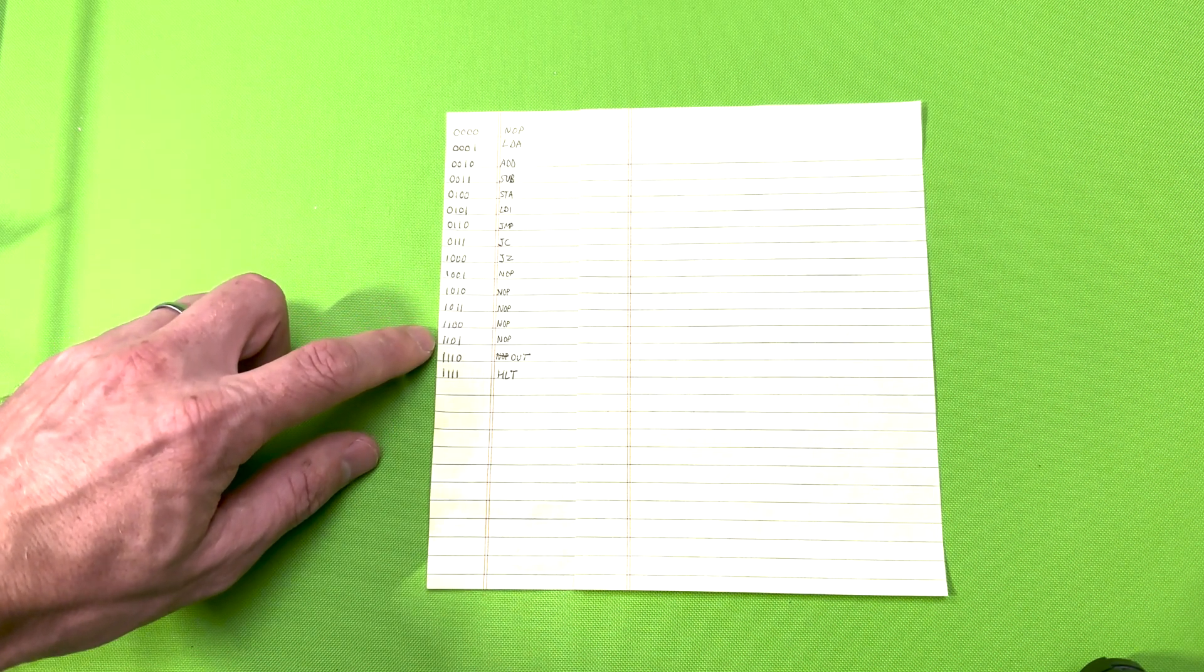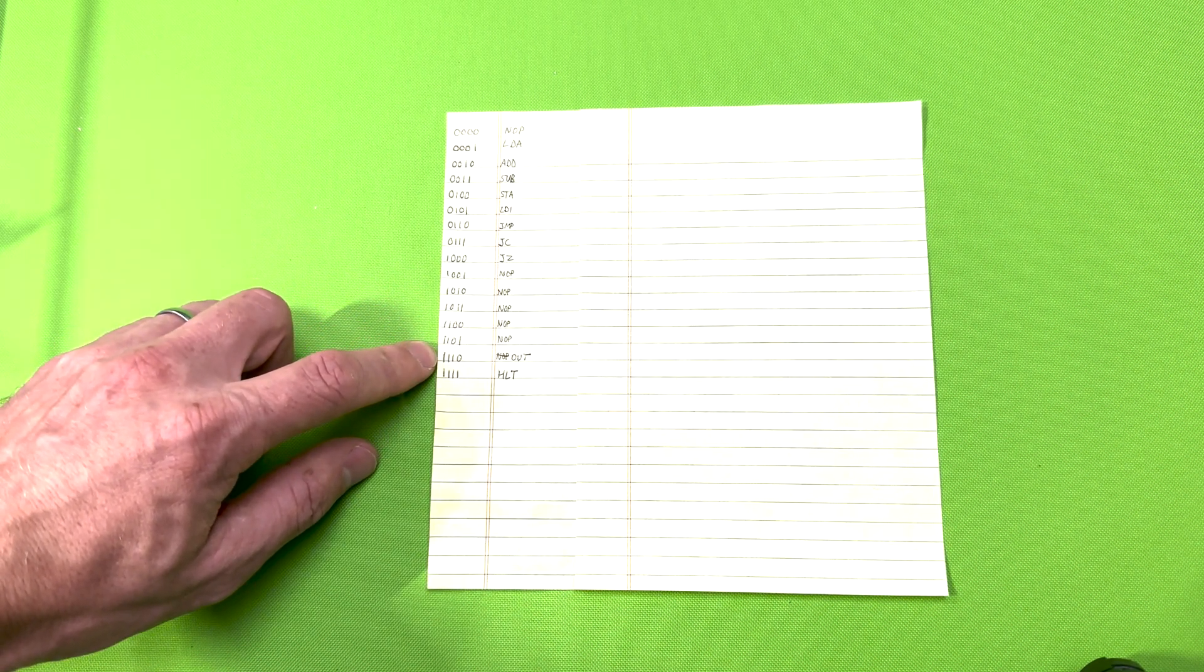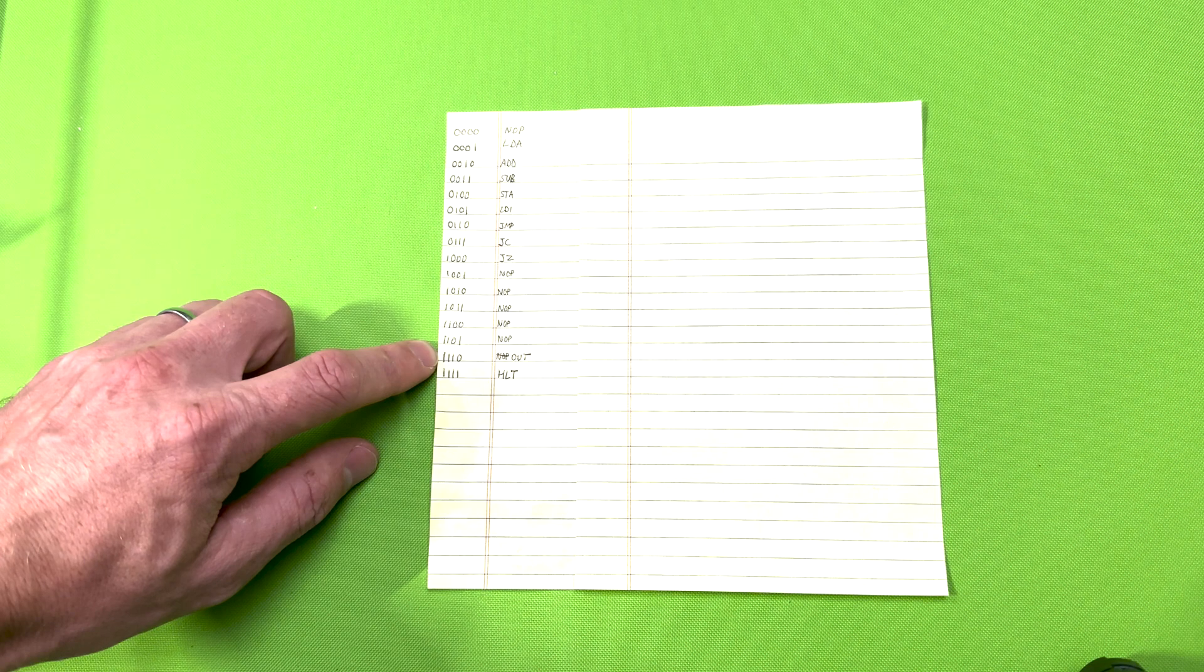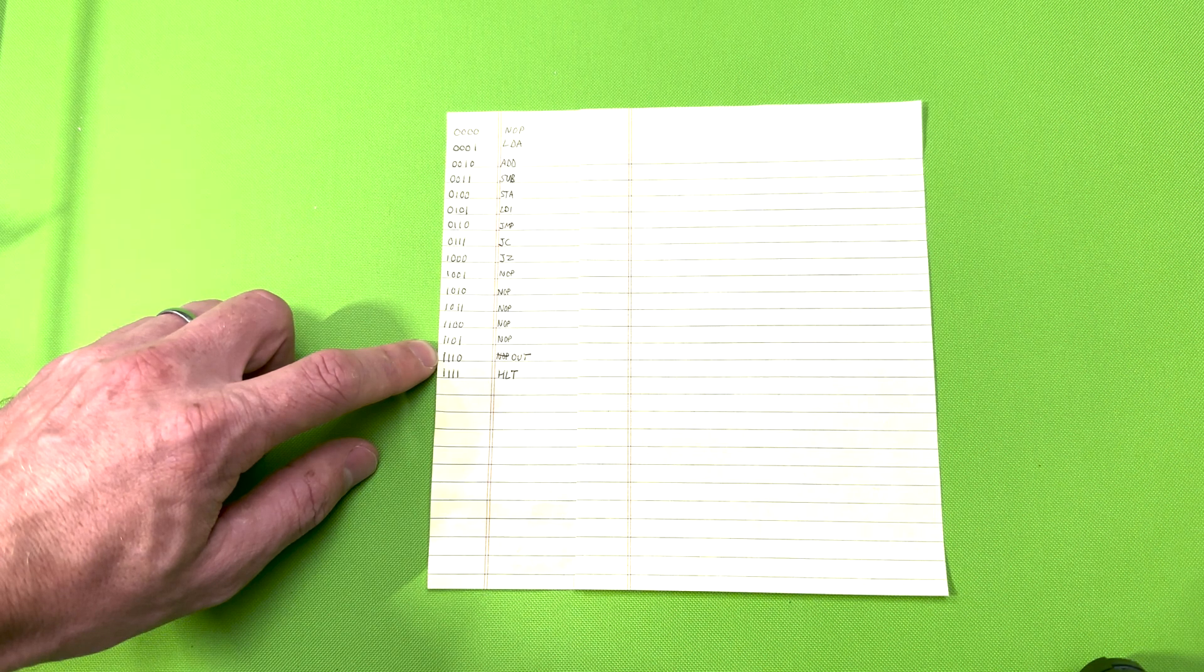We will skip over all of the NOP instructions where they're just placeholders and take a look at the last instruction, the OUT instruction. This instruction moves data from the bus to the output register.